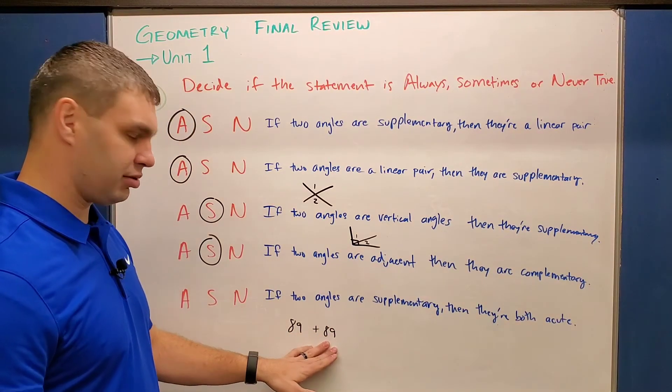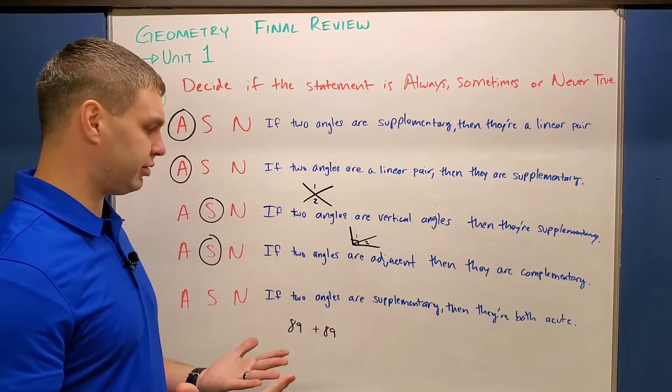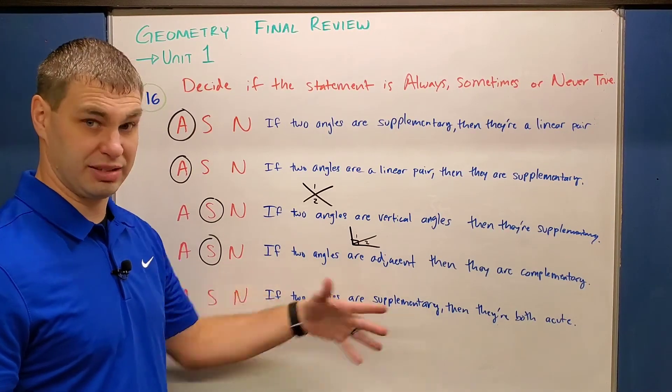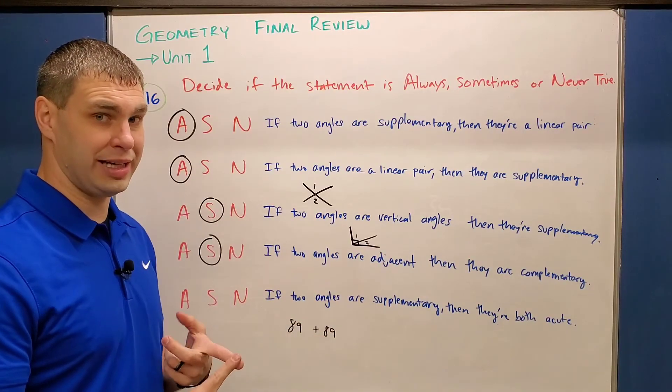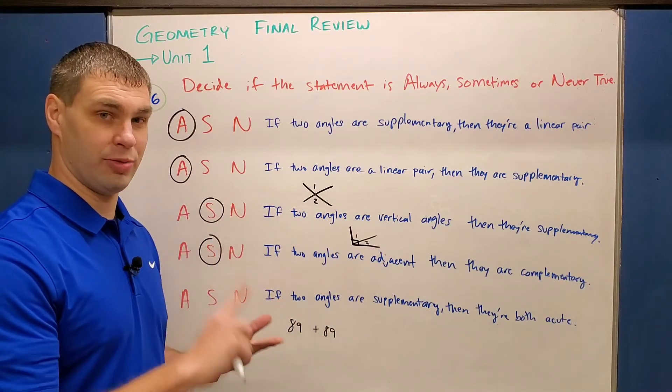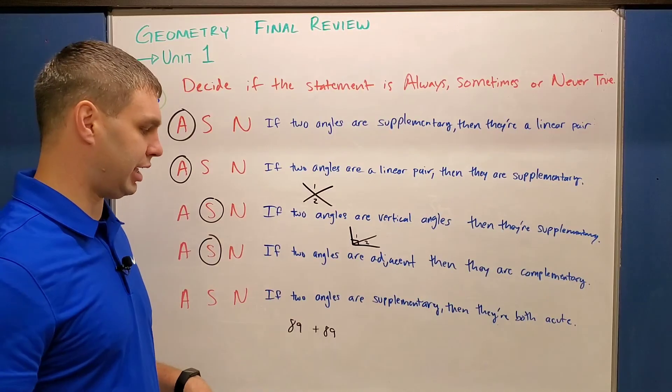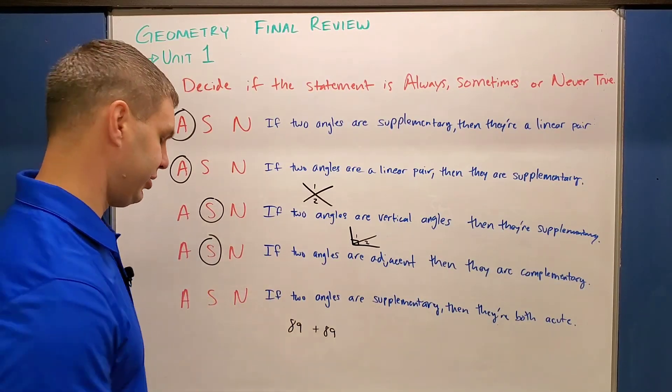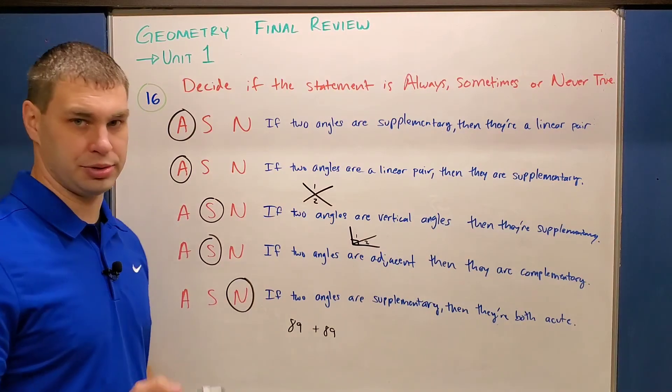Well, if I have both of those that are the largest acute angles that I can get, I need 90 and 90 to get supplementary at least, right? So at least one of my angles has to be right or obtuse, which means they both cannot be acute and yet still be supplementary. So there's no way for that to happen. So this would be never true.